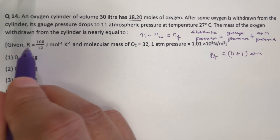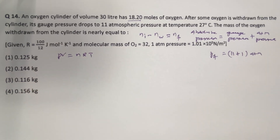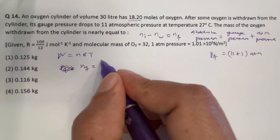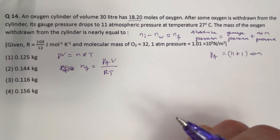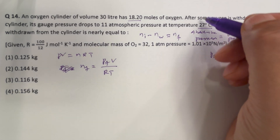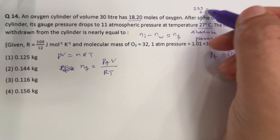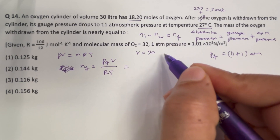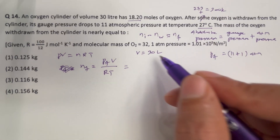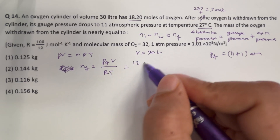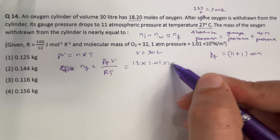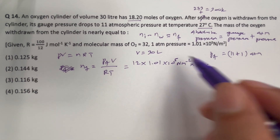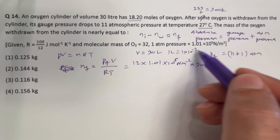Now, because the universal gas constant value is given, we can assume ideal gas conditions: PV = NRT. Therefore, Nf equals PfV divided by RT. Temperature is 27 degree Celsius, so 27 plus 273 equals 300 K. Volume is given as 30 liters — let us convert that into cubic meters for easier unit cancellation. So 12 times 1 atm pressure is 1.01 times 10 to the power 5 Newton per meter squared, and 30 liters equals 30 times 10 to the power minus 3 cubic meters.